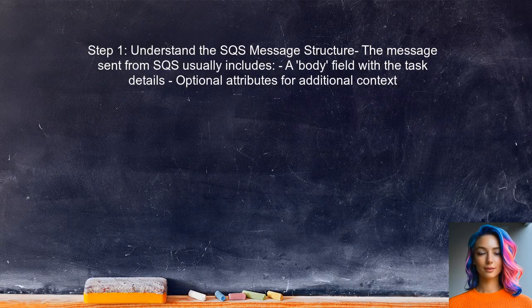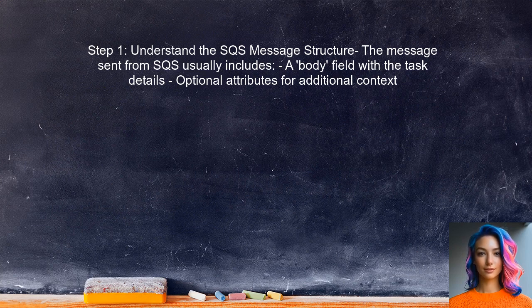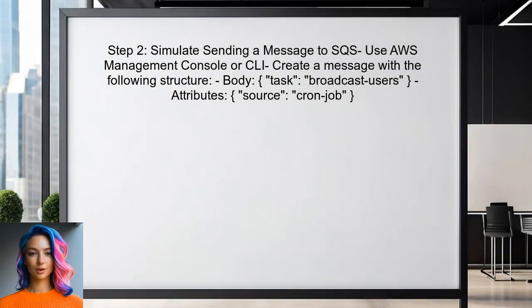To begin testing the cron job on the Elastic Beanstalk server, first understand the structure of the message that is sent from SQS to the worker — this message typically contains the necessary data for the task to execute. Next, simulate sending a message to the SQS queue manually using the AWS management console or the AWS command line interface, creating a message that mimics what the cron job would send.